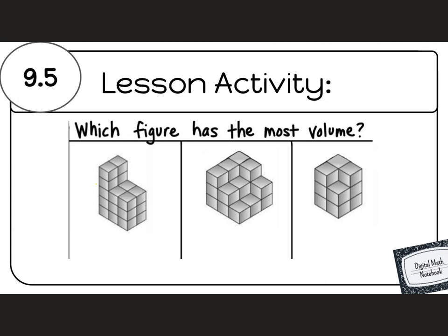I'm going to look at this first shape and find the volume of just the bottom first. I have 3 times 2 times 3. 3 times 3 is 9. Times 2 is 18. Plus we have 1, 2, 3, 4 on top. So that gives me 22.